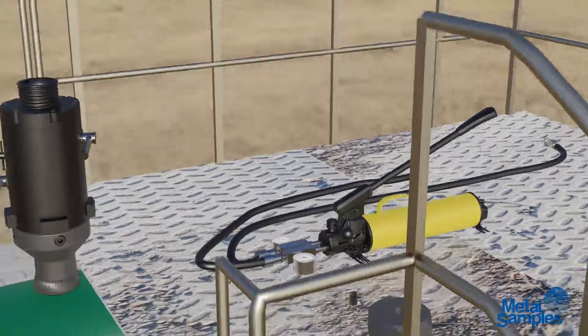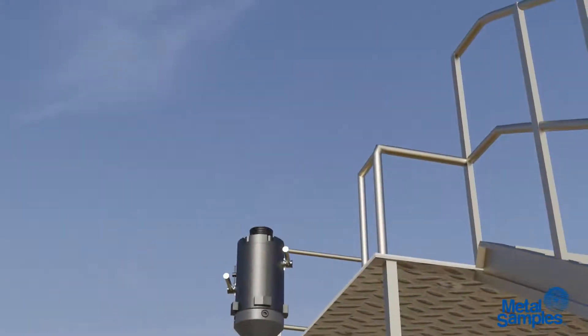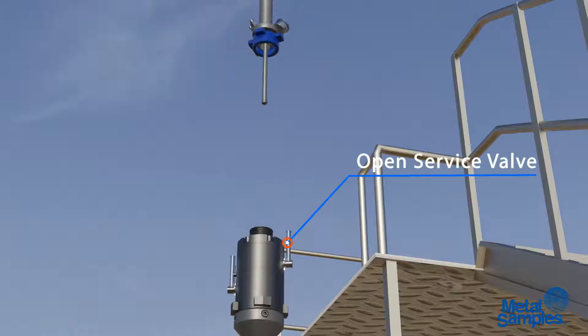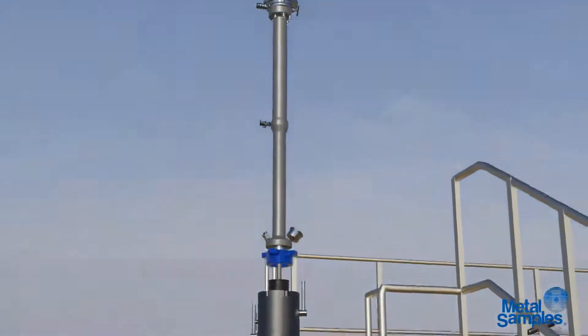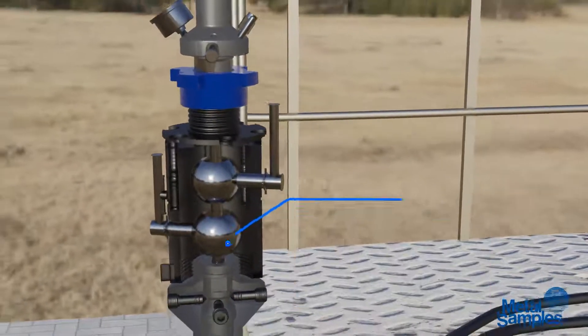Close the head valve and disconnect the hoses. Place the retrieval tool on the service valve and rotate it. This will engage the connecting rod with the coupon holder.